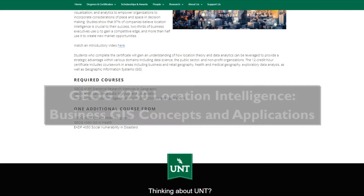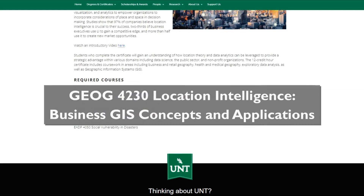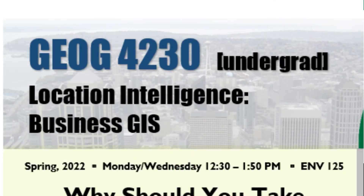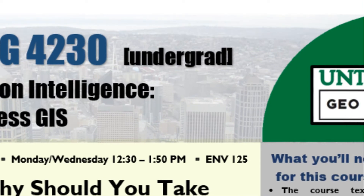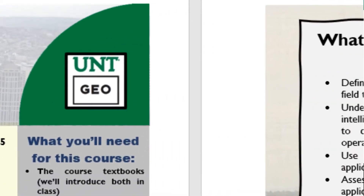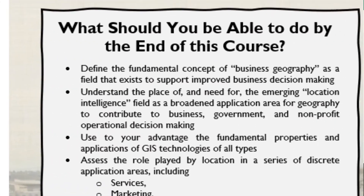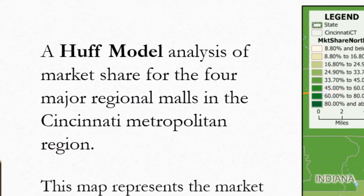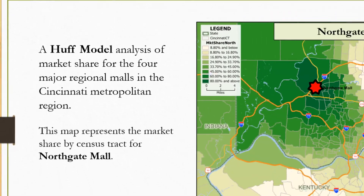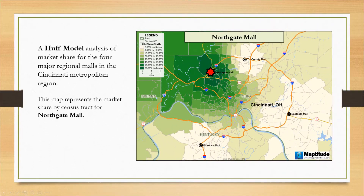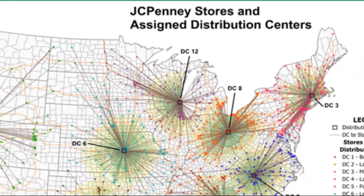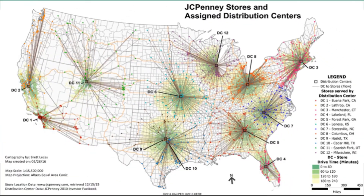The third required course is Geography 4230. This course focuses on defining the emerging field of location intelligence. Location intelligence uses geospatial tools to help businesses make better decisions.